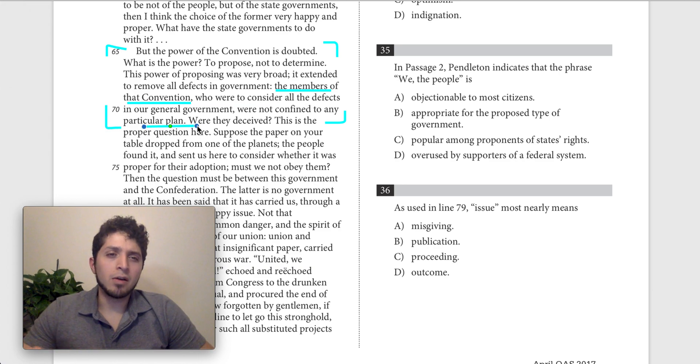He's saying the power of the convention is doubted. He's like but what was the power? It was to propose not to determine and the power of proposing was very broad. It extended to remove all the defects in the government. So this is basically Pendleton making the claim that they were justified in establishing a new constitution or in creating something new. They had the power to propose not just to determine or fix things.